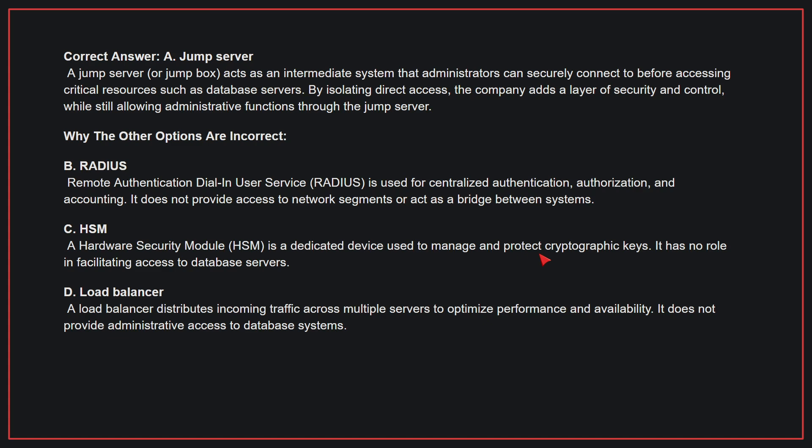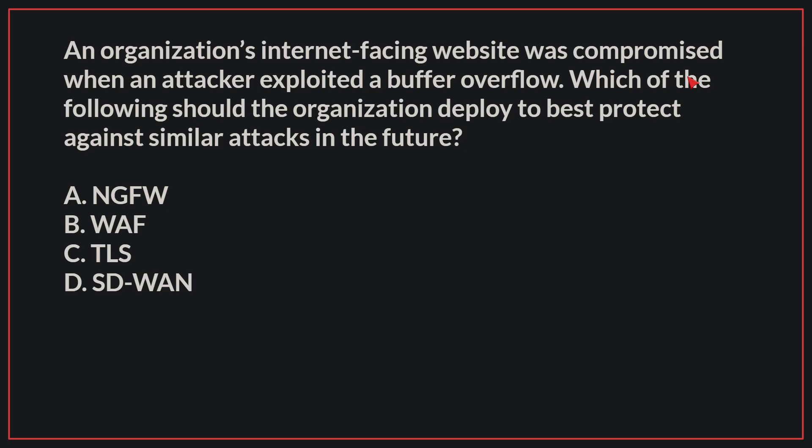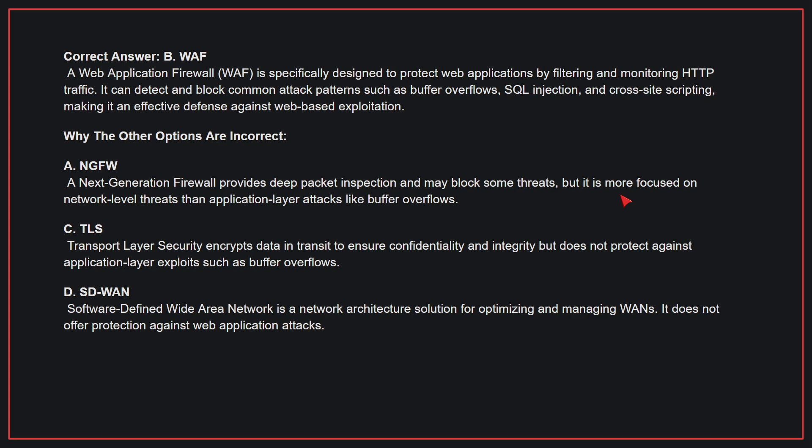Therefore, the correct answer is A. An organization's internet-facing website was compromised when an attacker exploited a buffer overflow. Which of the following should the organization deploy to best protect against similar attacks in the future? The correct answer is B: WAF. A web application firewall is specifically designed to protect web applications by filtering and monitoring HTTP traffic.